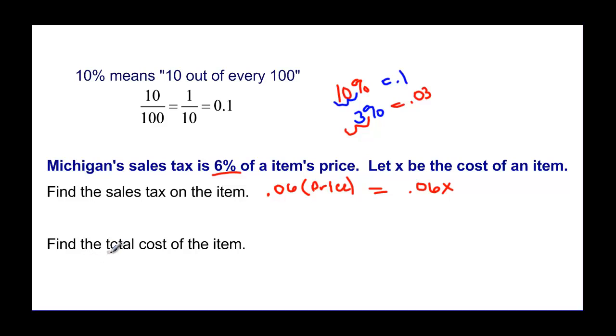Now it says find the total cost. Well total cost is going to be the price plus the tax. Our cost is the same thing as price. So price is x plus our tax that we just found to be 0.06x. And if I combine those, I'd have 1 plus 0.06 times x or 1.06x.